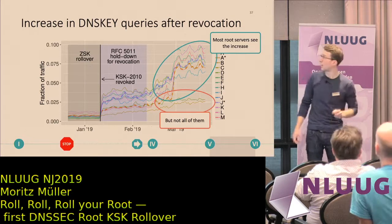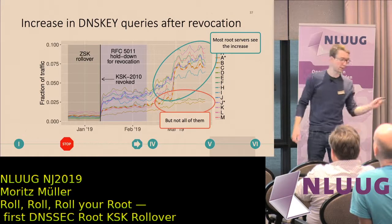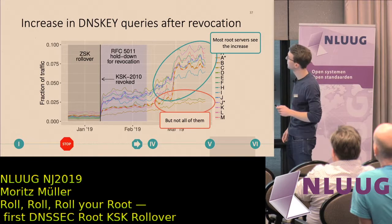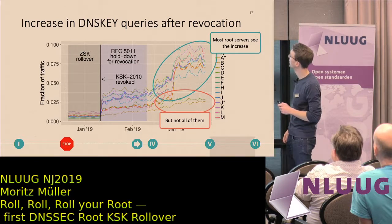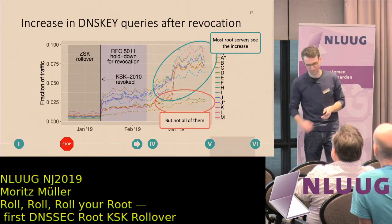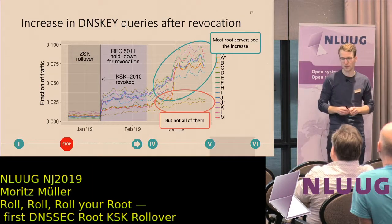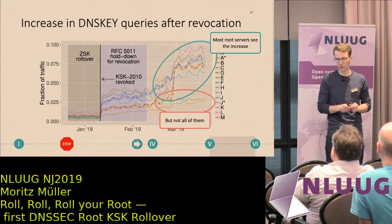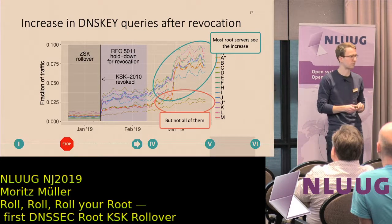We confirmed this pattern across almost all root server operators using another dataset. However, interestingly, we don't see this increase for all root servers — another fragment we can't fully explain. A question was raised about which root servers those were: probably B root and possibly E root, and it doesn't seem to be related to their size.